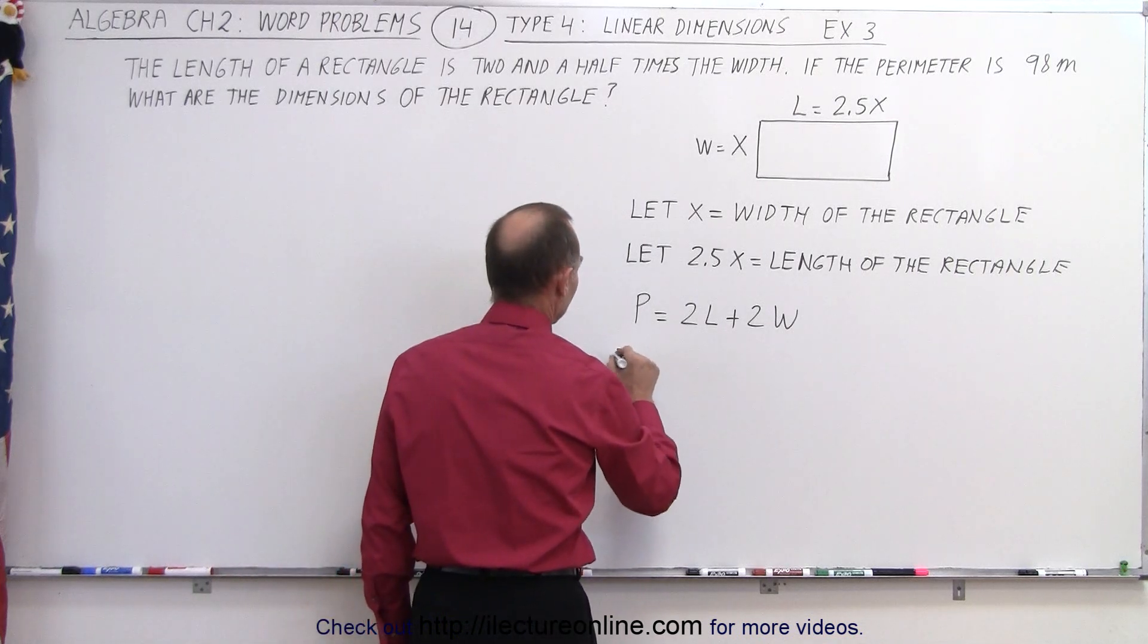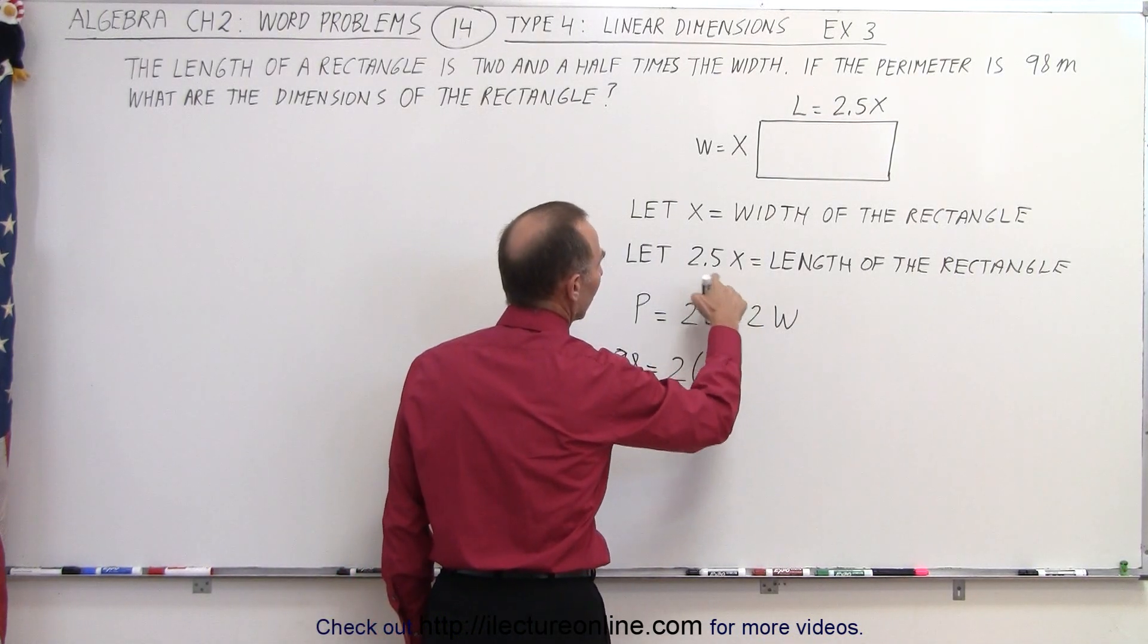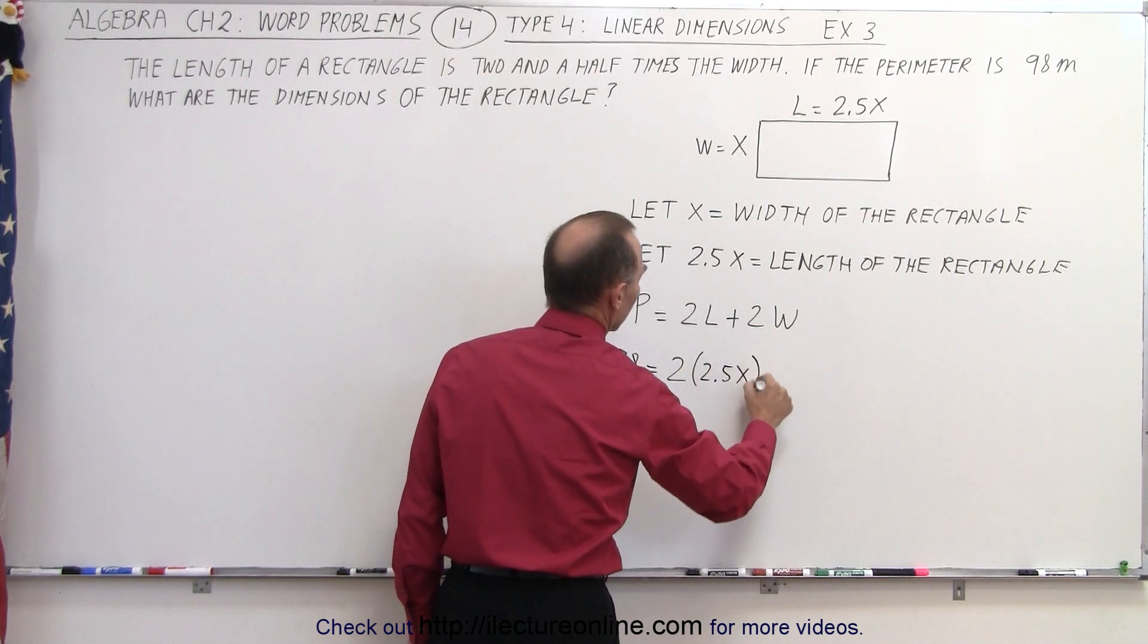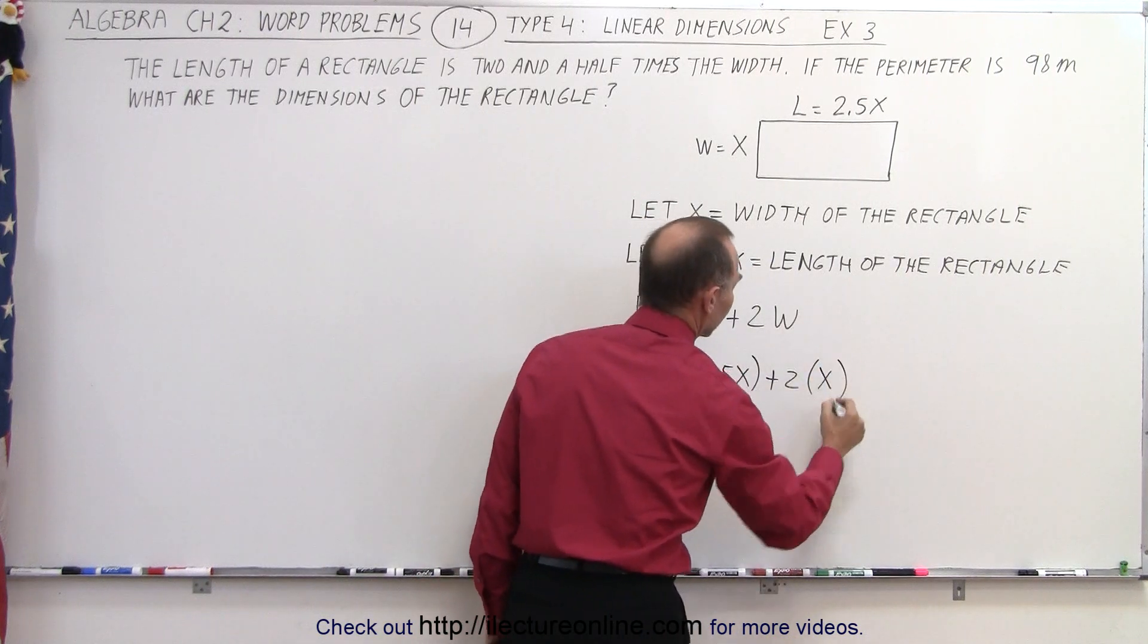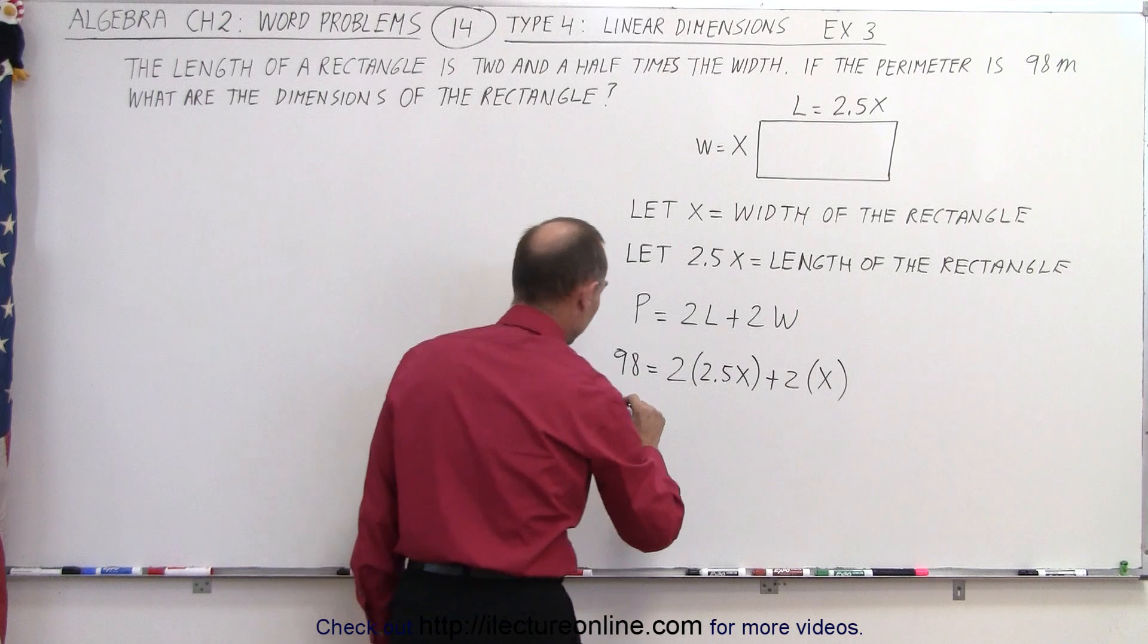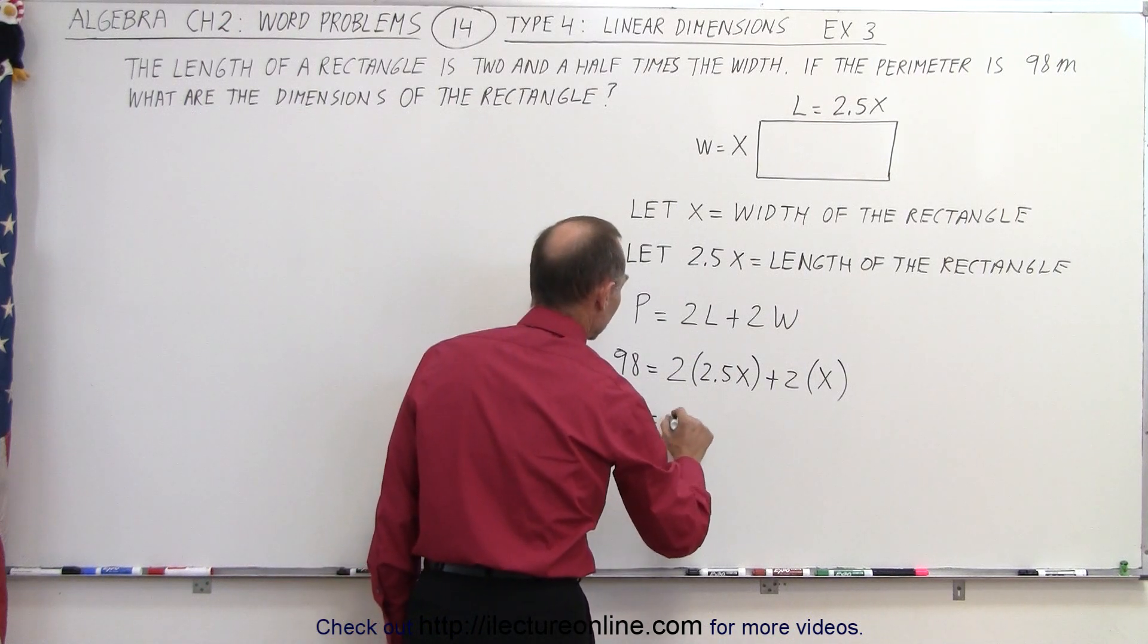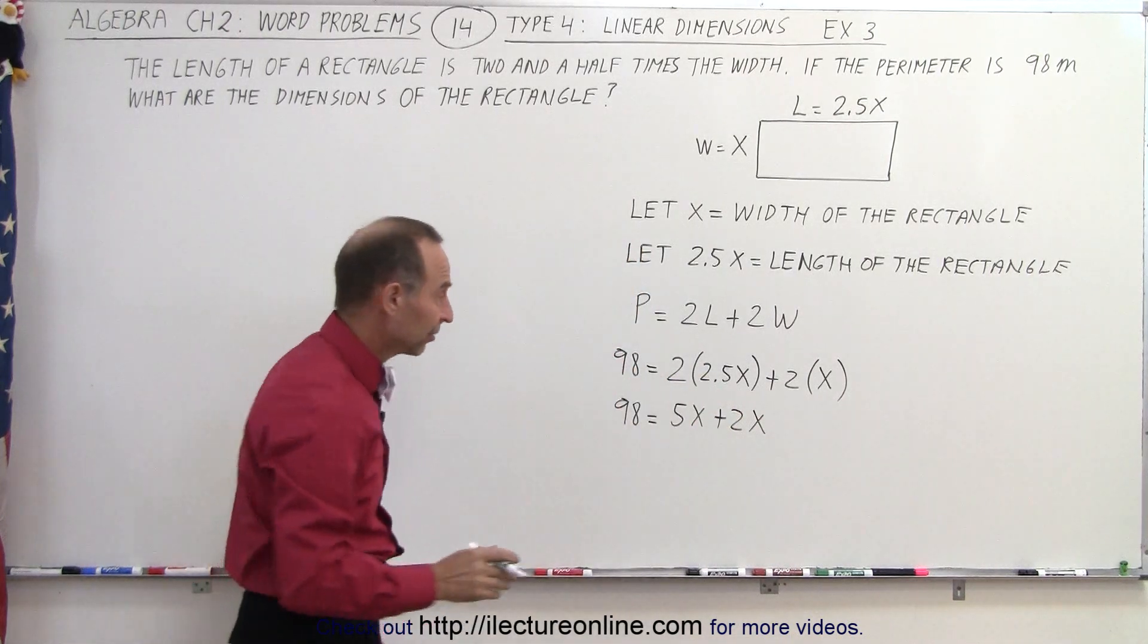So the perimeter is 98, which is equal to two times the length. Remember, the length was defined as 2.5x plus two times the width, which was defined as x. Now when we get rid of those parentheses, we multiply everything through, we get 98 is equal to 5x plus 2x, and now we can solve that equation for x.